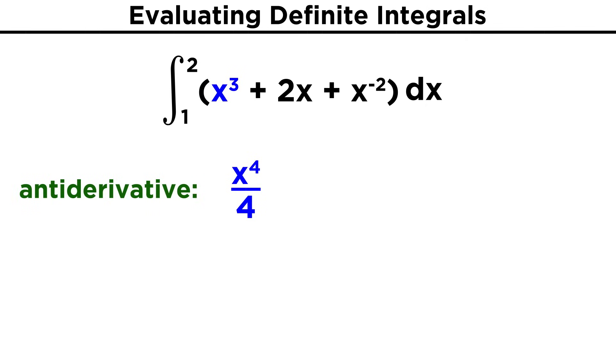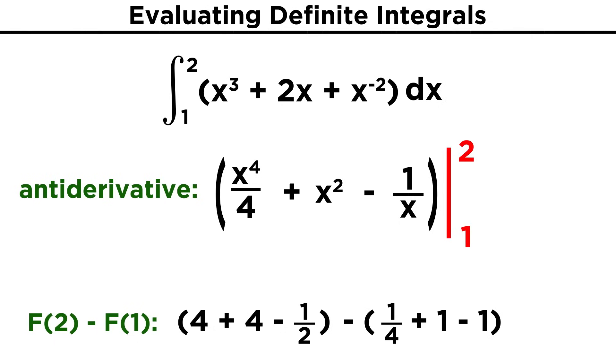Now we are ready to do what we normally do. x³ becomes x⁴ over 4. 2x becomes 2x² over 2, or simply x². And then for x^(-2), remember we are still just adding one to the exponent to get x^(-1). And then we divide by that exponent, so we put this over negative one. So that means we subtract x^(-1), which is really 1/x. So that's our antiderivative. Now we are ready to plug in some numbers. So this will be our final answer.